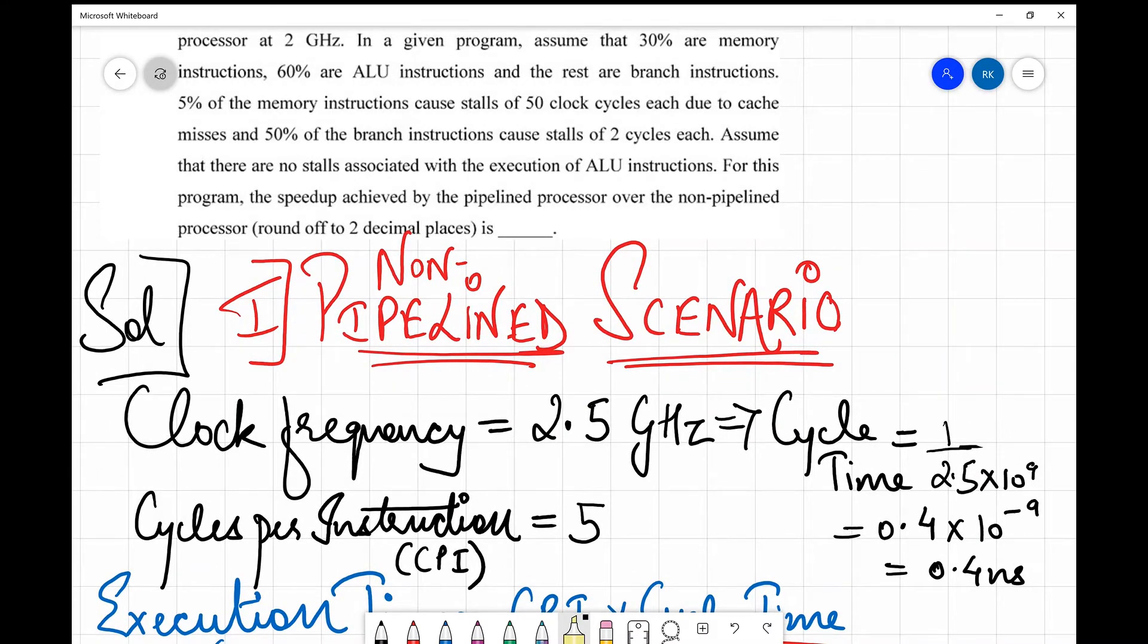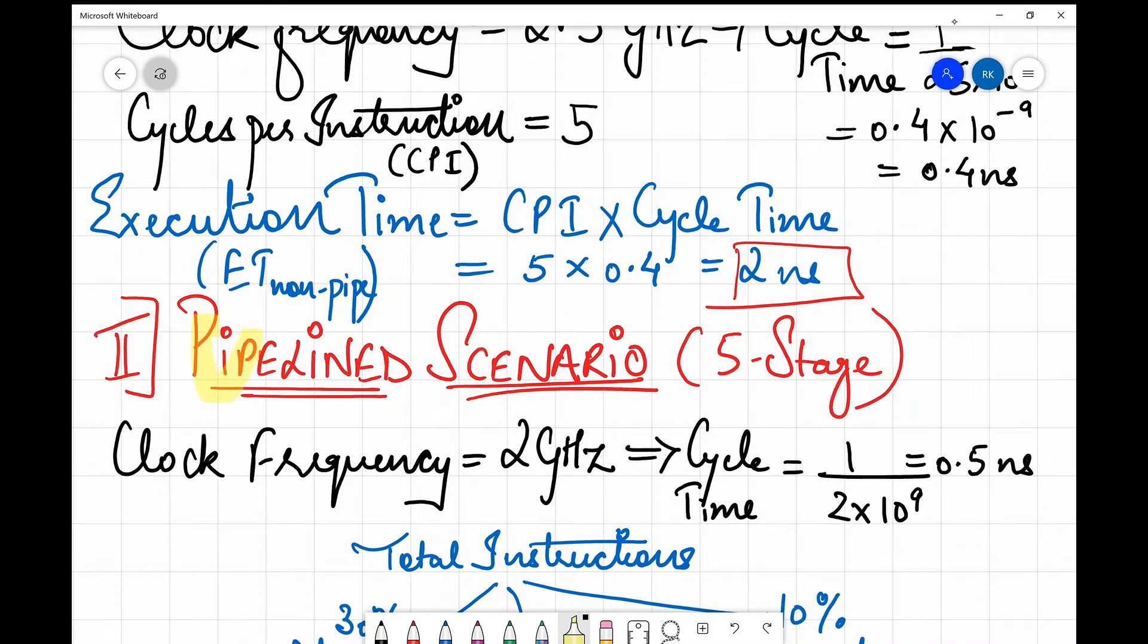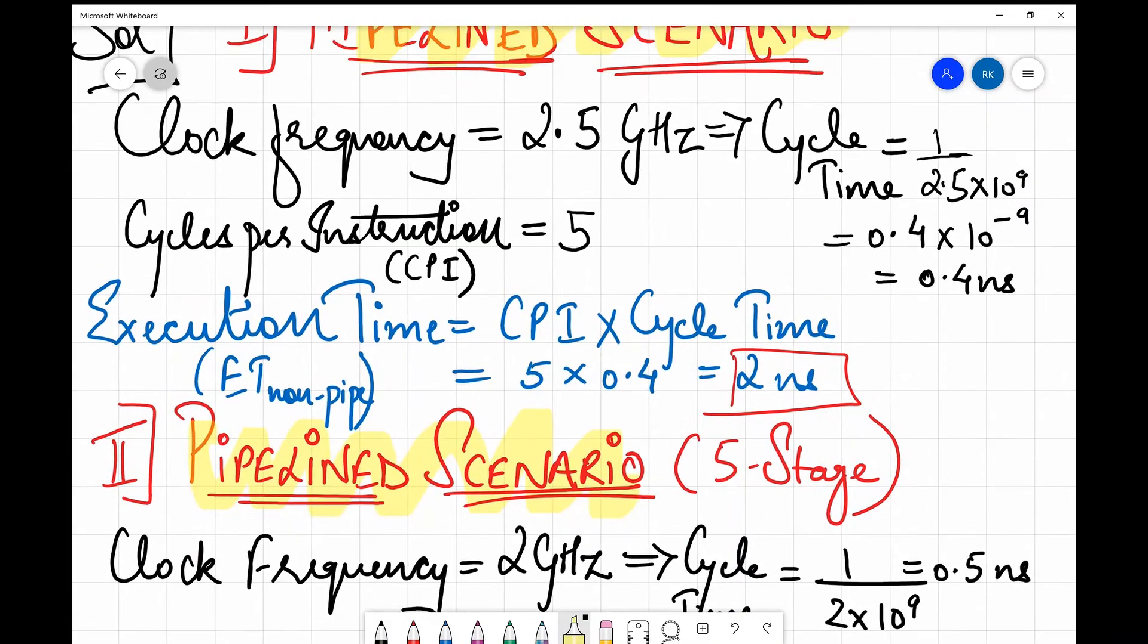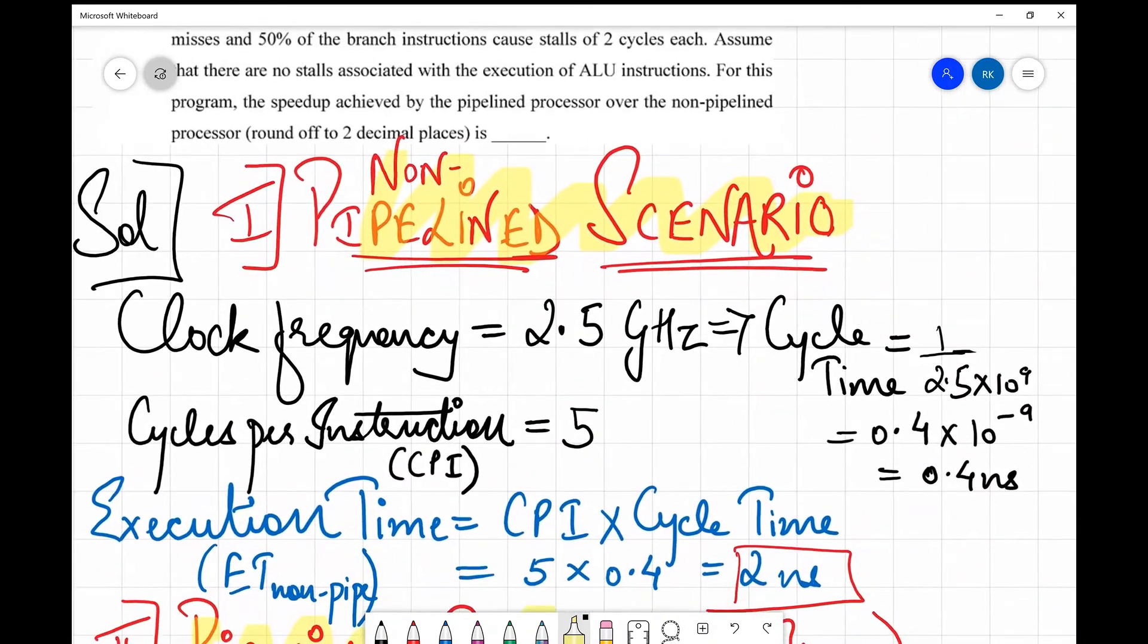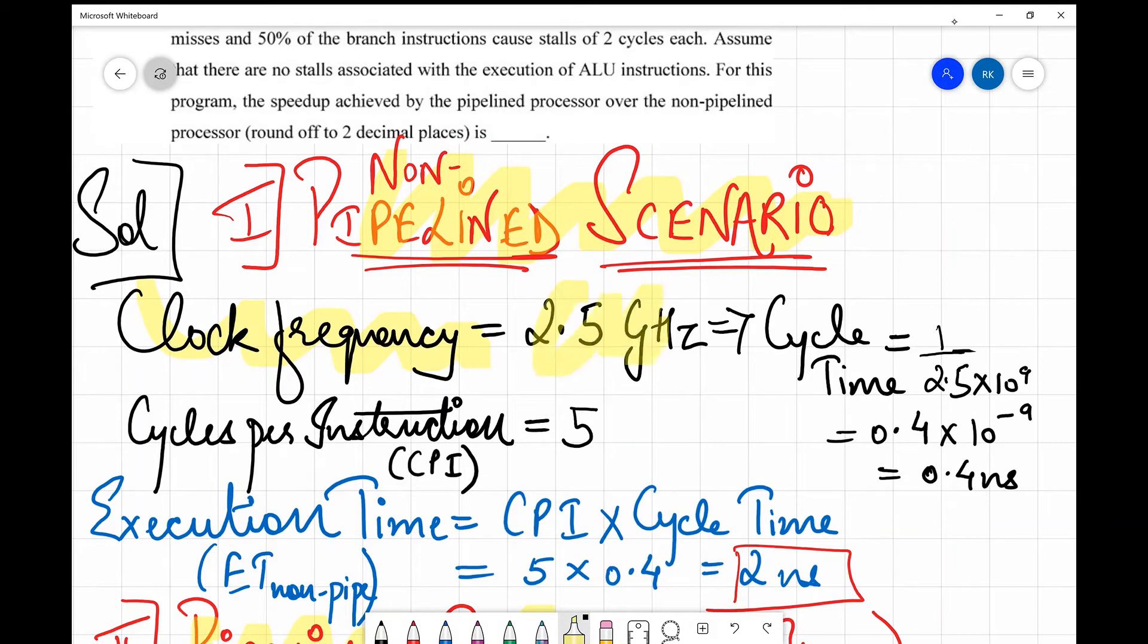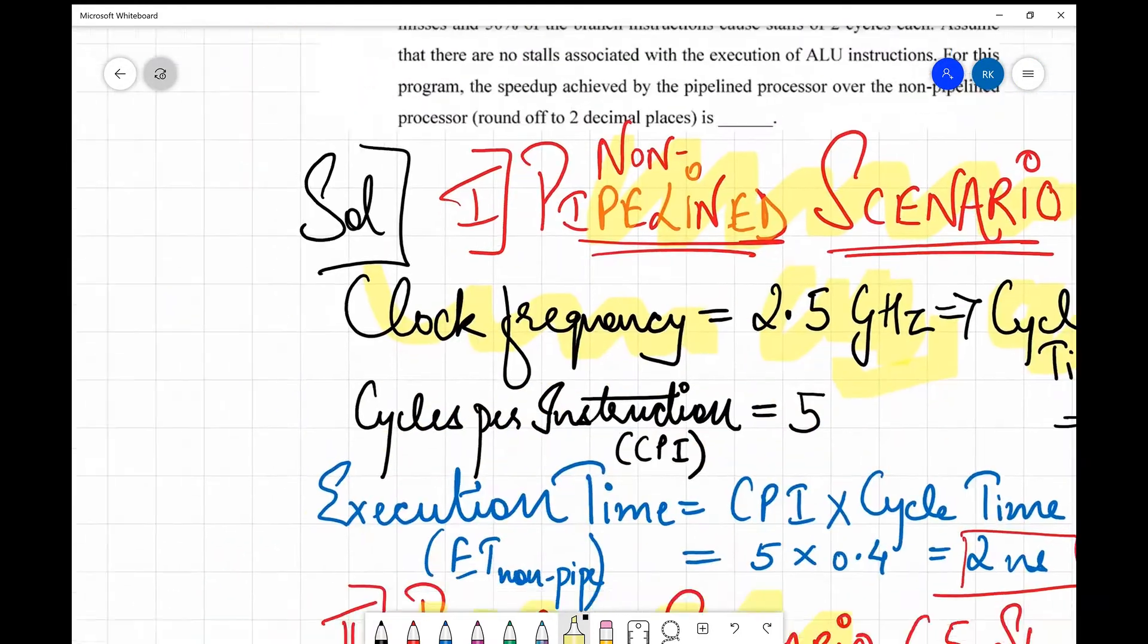How I solve this is I first find out the execution time in case of a non-pipelined scenario and parallelly I also find the time in case of a pipeline scenario, and then I finally find out the speedup. I have written the clock frequency which is given as 2.5 gigahertz, so from this we can find the cycle time which is 1 by clock frequency, 1 by 2.5 × 10^9 since it is gigahertz, and this comes out to be 0.4 nanoseconds.